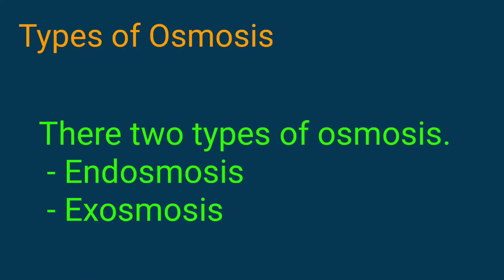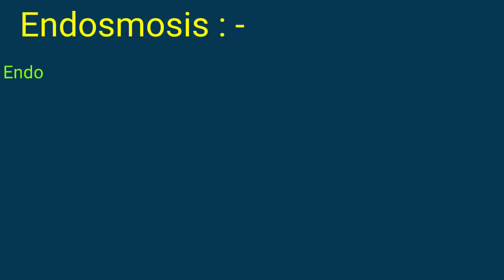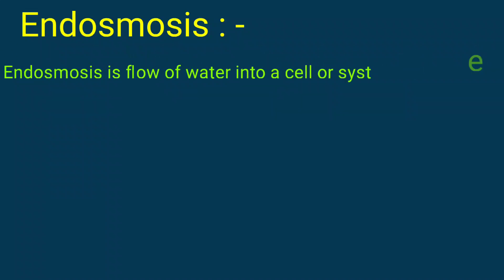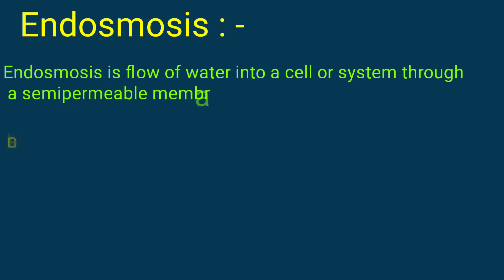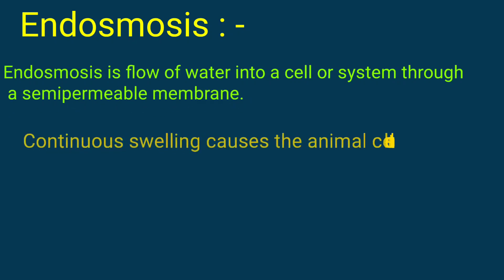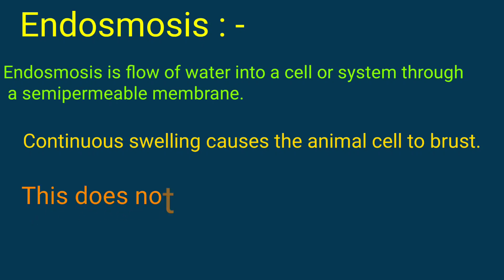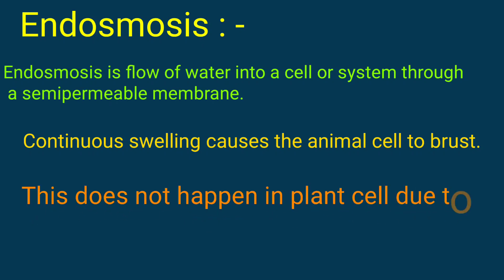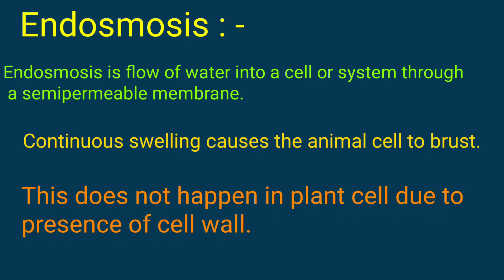There are two types of osmosis: endosmosis and exosmosis. Endosmosis is the flow of water into a cell or a system through a semi-permeable membrane. Continuous swelling causes the animal cell to burst. This does not happen in plant cells due to the presence of a cell wall.